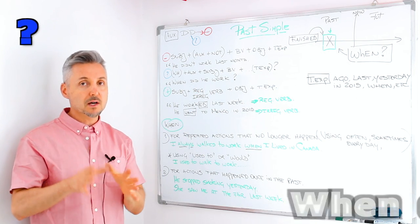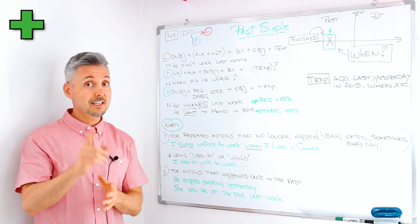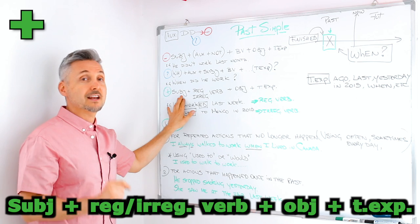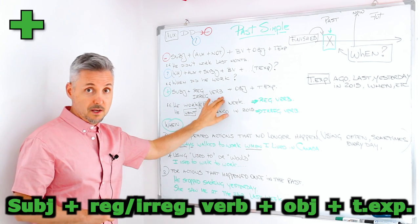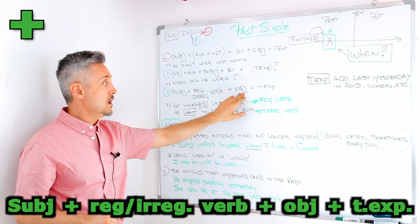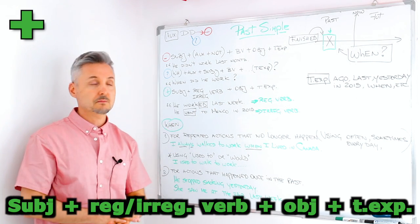Now if you want to make a positive sentence, this is what you have to study. The subject. Then the regular or irregular verb. And I will get to that in one second. Then the object. And then the time expression.